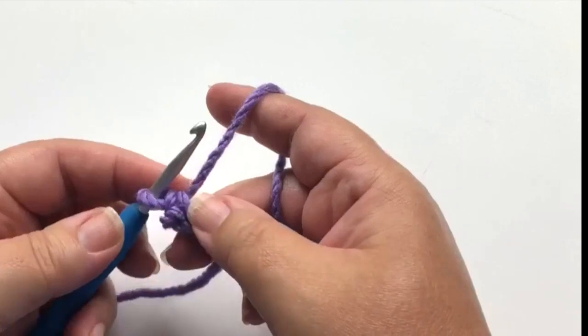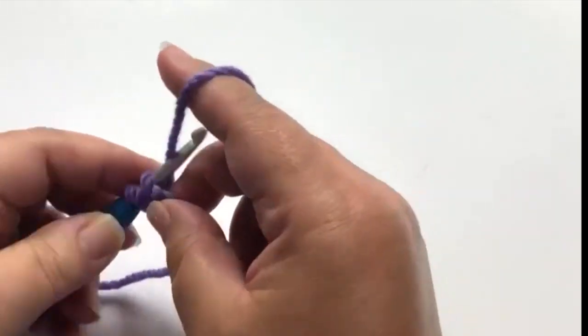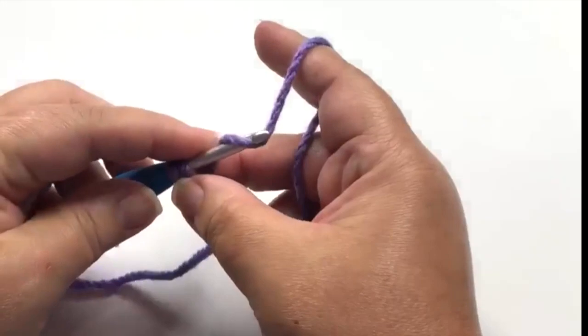Now this little loop right here is where you'll do your first stitch. Insert your hook and again work a single crochet.